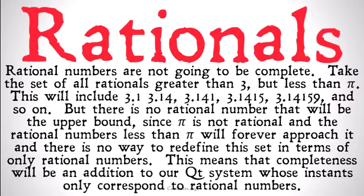But there's no rational number that will be the upper bound. There's no way we can define this set of rational numbers only by using other rational numbers — no way to get that top bound, that highest point, only with other rational numbers. Since pi is not rational, and the rational numbers less than pi are forever going to approach it, getting closer and closer but never reaching it, there's going to be no way to redefine this set in terms of only rational numbers. This means that completeness will be an addition to the Qt system, whose instants only correspond to rational numbers. Qt is dense, but it's not complete — it has cuts or gaps in it where things like irrational numbers would fit.